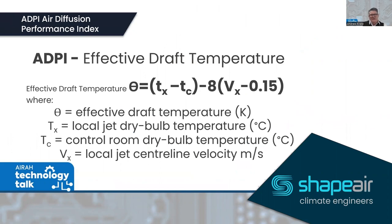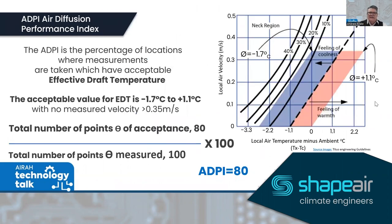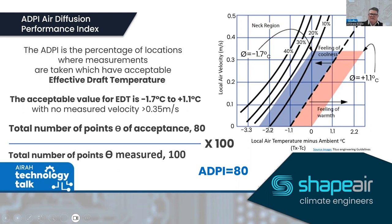The ADPI is an evaluation of effective draft temperature using the formula. In practice: if you had 100 test points and 80 were acceptable, you'd have an ADPI of 80, meaning 80% of the population would be comfortable. The parallelogram on screen shows the range from minus 1.7 to plus 1.1 — the temperature variation we're trying to stay within.